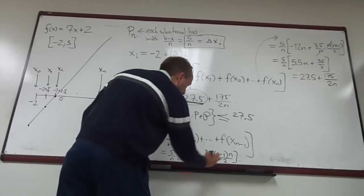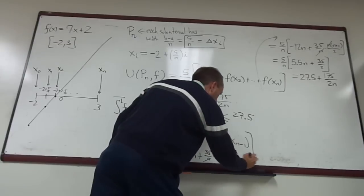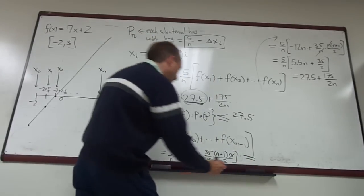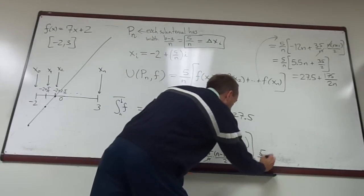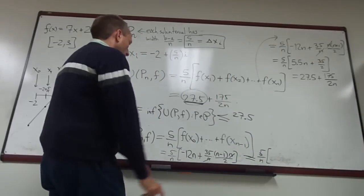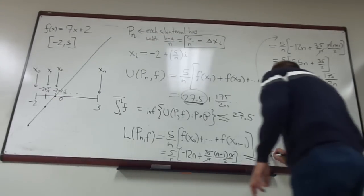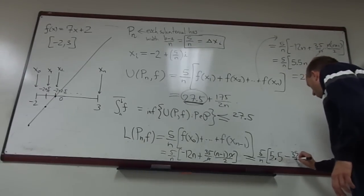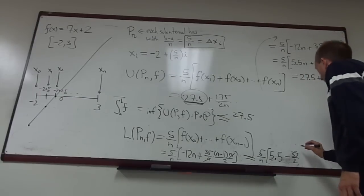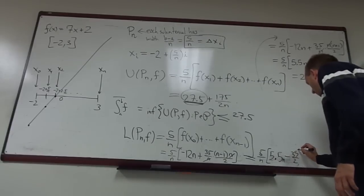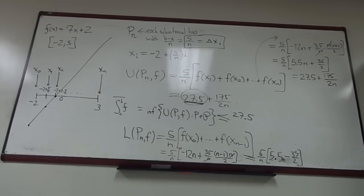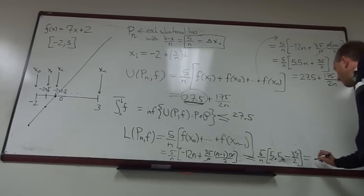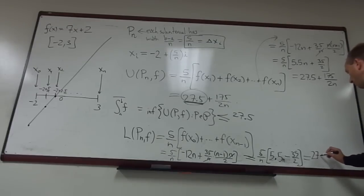But again, the n's cancel here. If you simplify this whole thing again, you're just going to get 5 over N times, again, 5.5, but this time it's going to be minus 35 over 2. 5.5N minus 35 over 2. So again, this becomes 27.5 minus 175 over 2N.